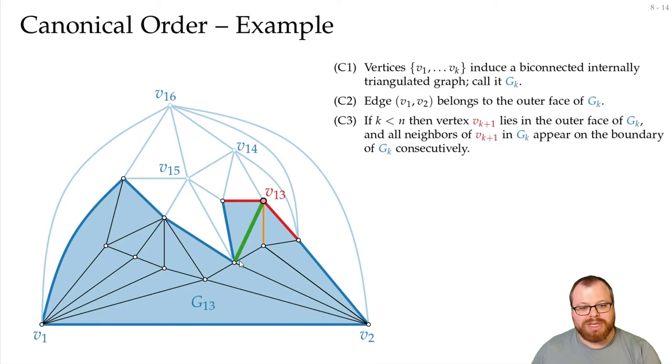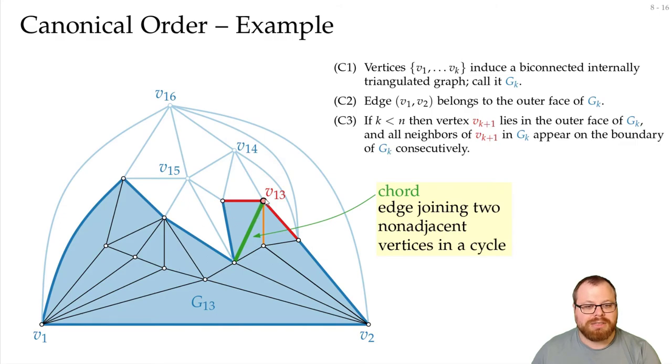And this interior edge here, this is a so-called cord. A cord is an interior edge between two vertices on the outer face. And in general, it's just an edge joining two non-adjacent vertices in a cycle. So from now on, we want to make sure that we never pick a vertex that has a cord.